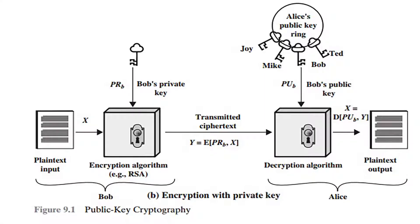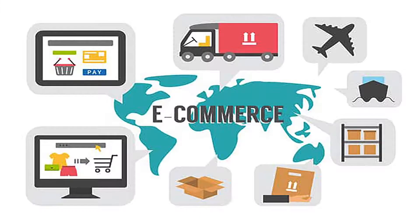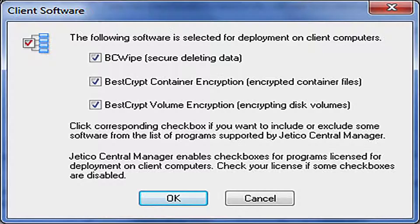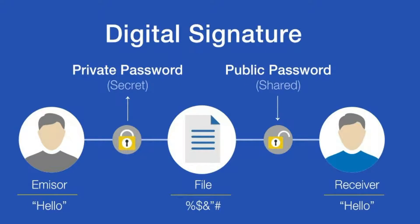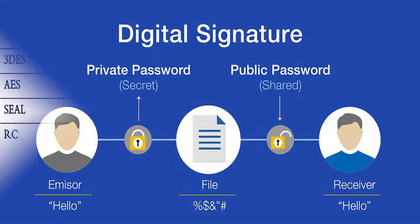The reverse of this process also works. Data encrypted using the private key can be decrypted only using the public key. But this is not a sensible way to encrypt sensitive data because it means that anyone with the public key can decrypt the data. Nonetheless, public key encryption is useful because it means the private key can be used to sign data with a digital signature, which is an important requirement for e-commerce and other commercial applications of cryptography. Client software can then use the public key to confirm that the message was signed with the private key and that it has not been tampered with after being signed.